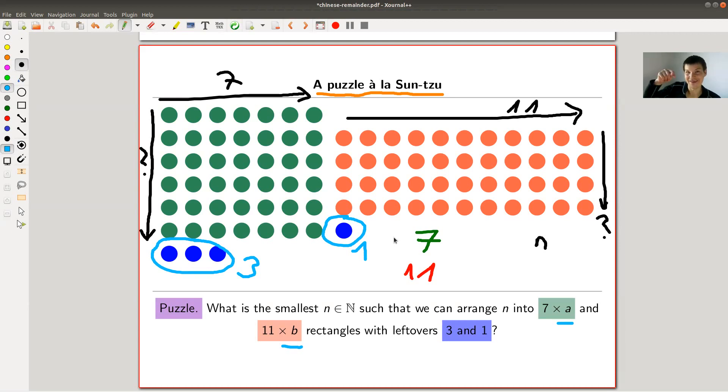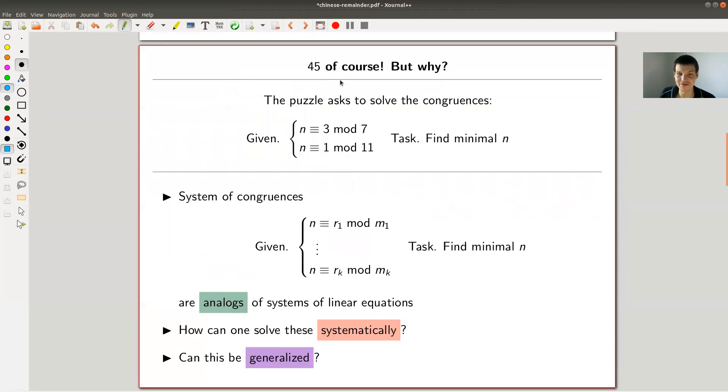Yeah, so history is again linked down in the description. Apparently, some Chinese mathematicians like to think about kind of troop arrangements in rectangles, whatever. Anyway, this is a very classical question. And of course, I've already illustrated the answer, which is 45.